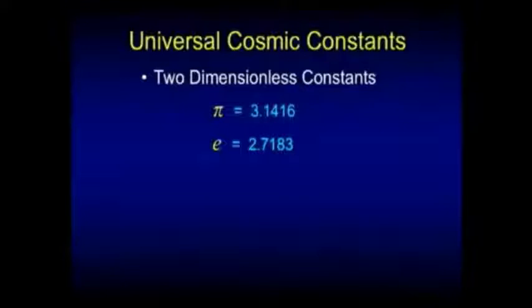There are a couple of constants in the universe that are dimensionless. There are two of them in view here. One is pi. It's a dimensionless constant. Pi is 3.14156, 159, on and on.